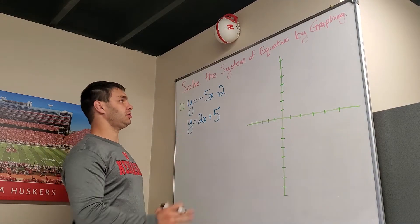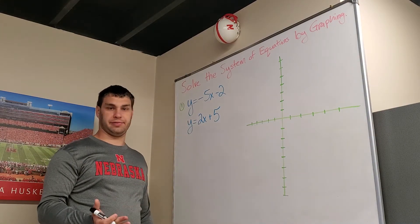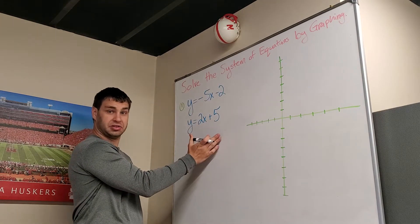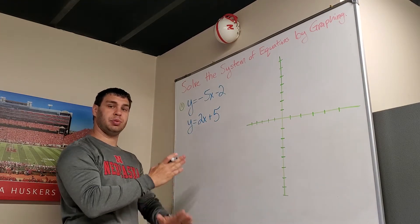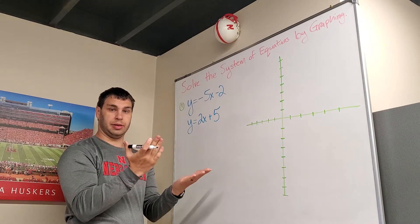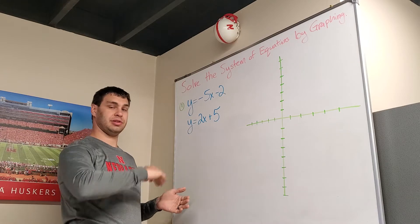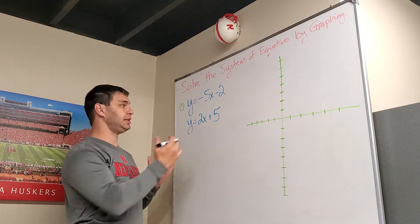All right, the first way we learn to solve a system of equations is by graphing. So I'm going to graph both functions, both equations, on the same graph, and the point where they cross is going to be my answer. Or remember, if they don't cross—parallel lines—then there'll be no solution. Or if they're the same line, it's going to be many solutions. So let's see which one this is.